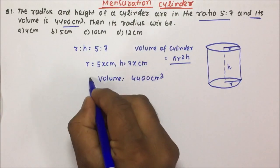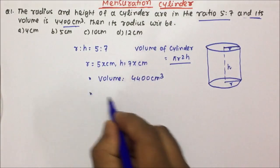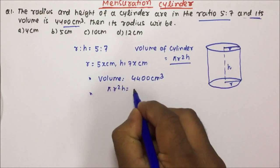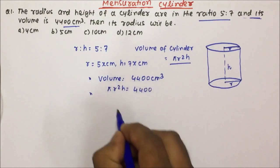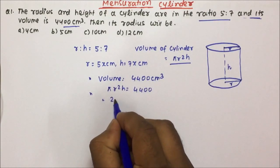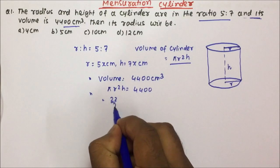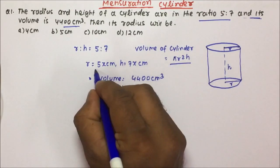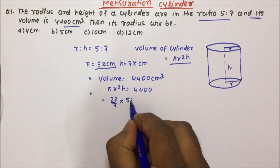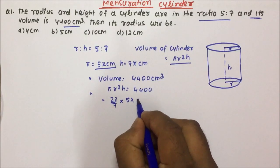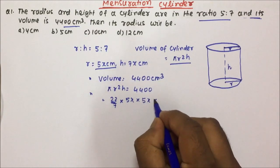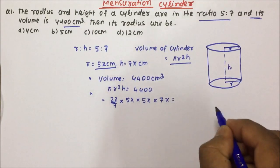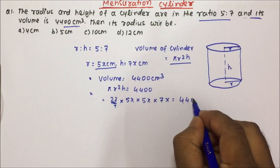You have to calculate the radius. So volume will be pi r square h equals 4400. That gives us 22 by 7 into radius — radius is 5x — so 5x into 5x, and height will be 7x, equals 4400.